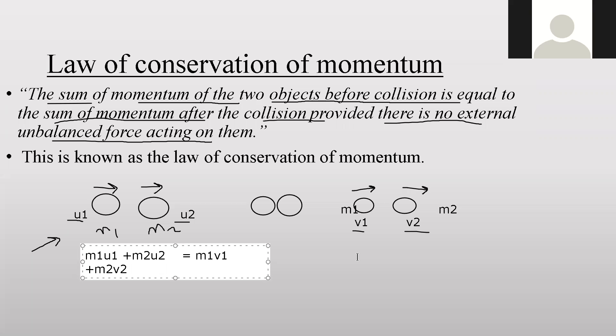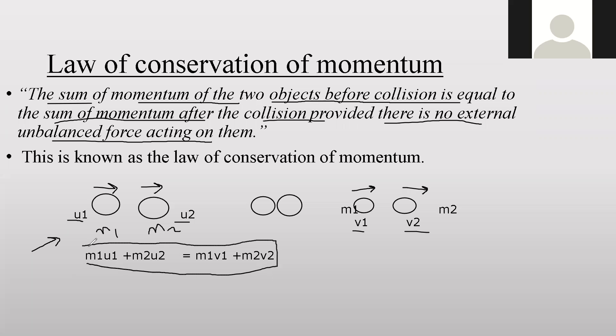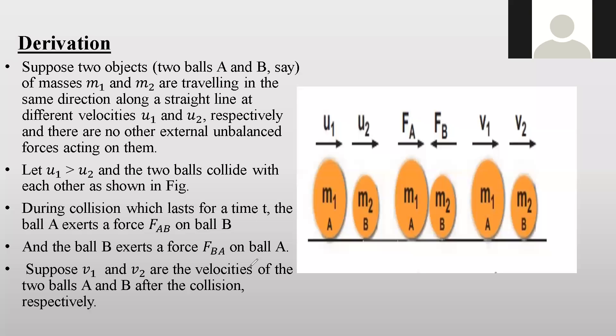This is the mathematical form of the law of conservation of momentum. We will see a derivation to prove that initial momentum before collision equals final momentum after collision. You must learn this formula as it is used in solving many numericals based on conservation of momentum.